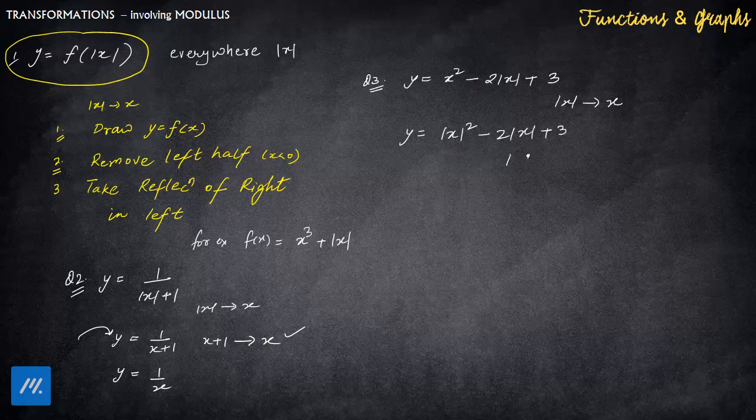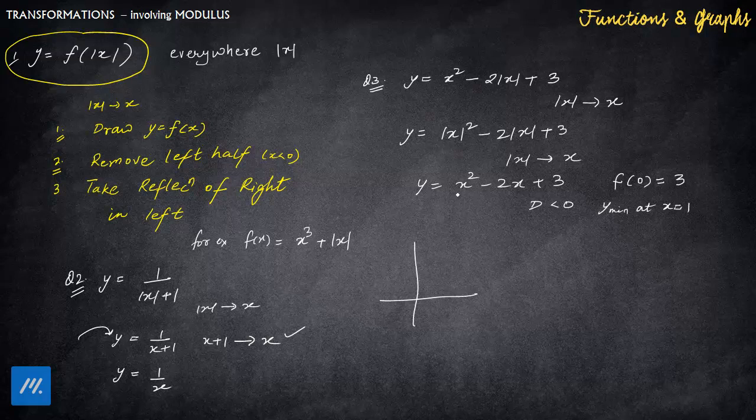Coming back, now if you have applied that |x| goes to x, this will become a simple quadratic. And if you notice, d is coming out to be less than zero for this particular quadratic. At x=0, f(0) is coming out to be 3. And the point of minima is at x=1. So the graph: x² coefficient is positive, so this is an upward parabola. But it will never touch the x-axis because d is less than zero. So apply the transformation of |x| goes to x.